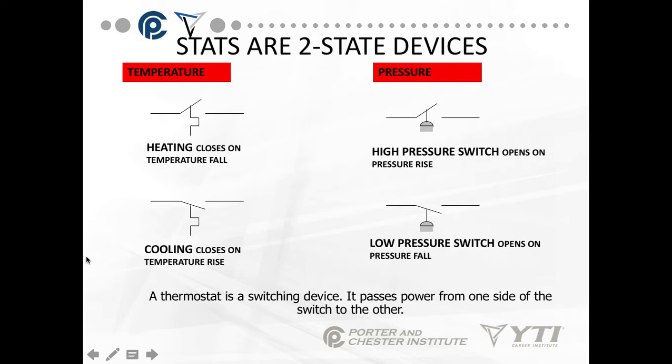The thermostat is a switching device — all it does is pass power from one side of the switch to another. It doesn't use power. So if you take a voltage reading across a thermostat, you should never have a voltage drop. If it's closed, it acts as a closed switch and should have zero volts. If it's open, it acts as an open switch and should have 120 volts.